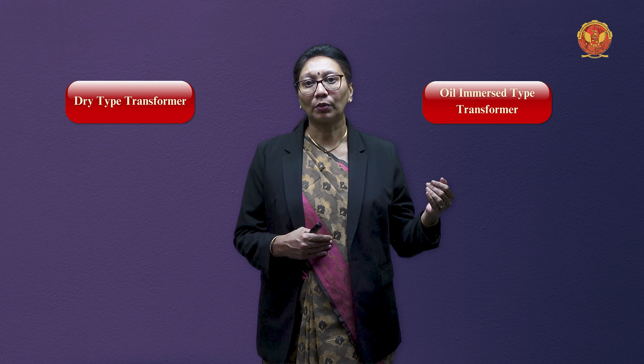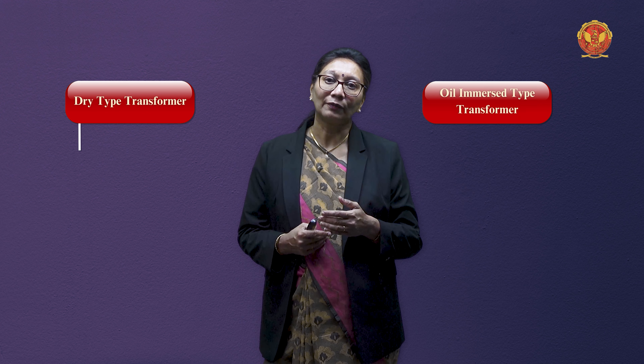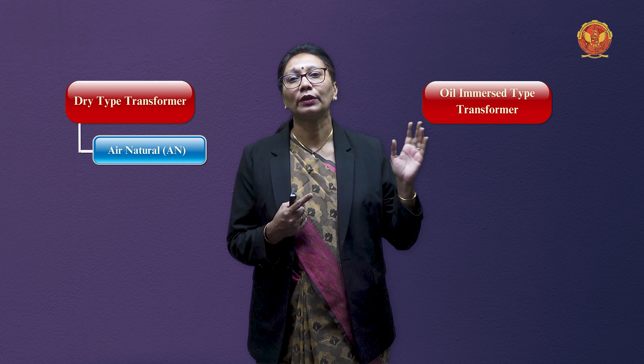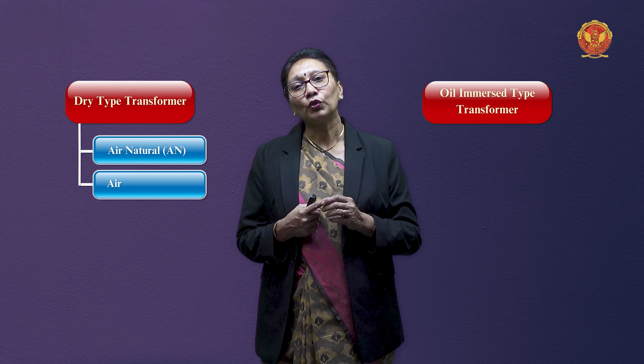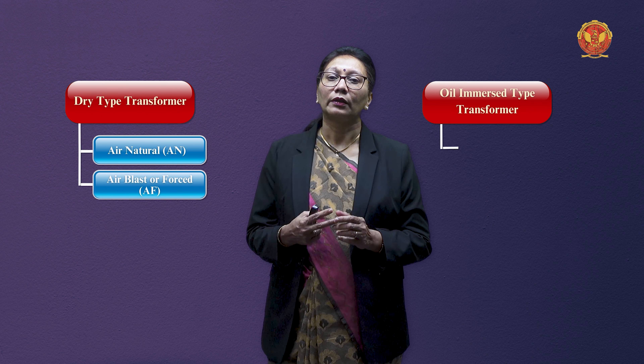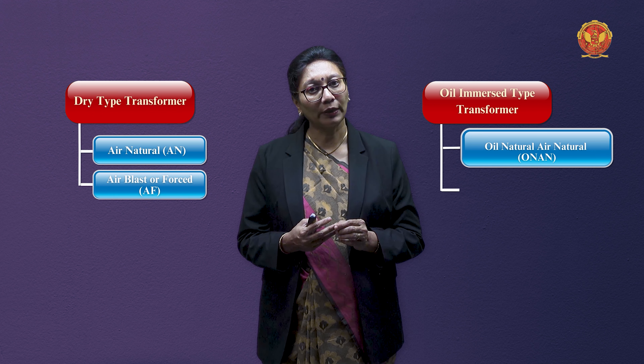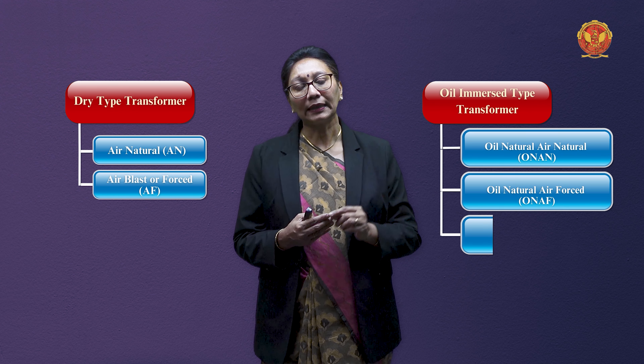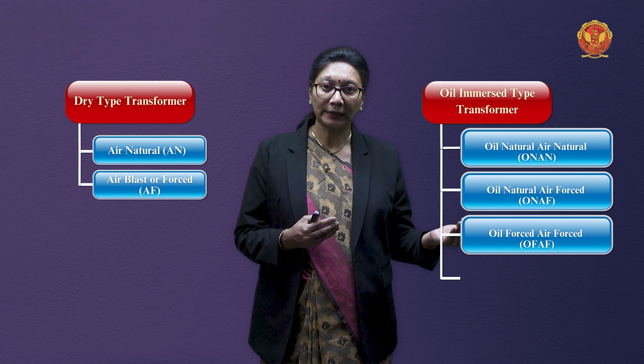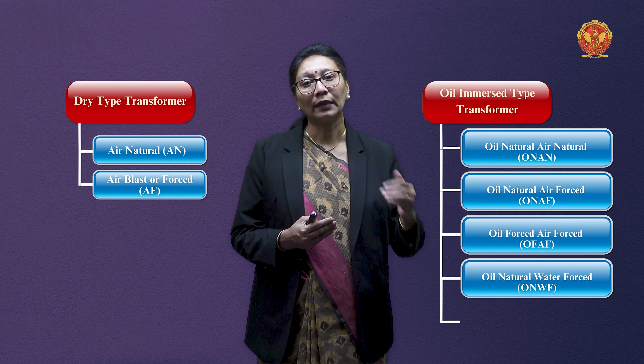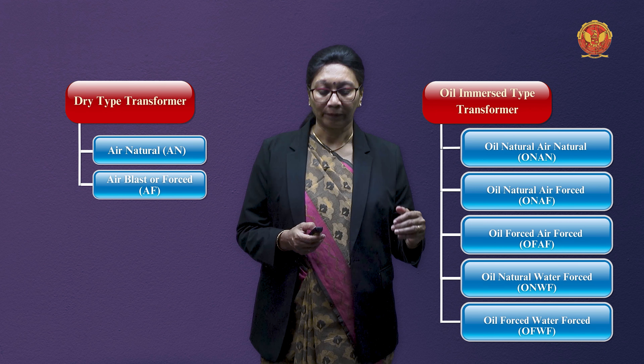Basically there are two types of transformers: one is dry type, in which no oil or water is used, and the other is oil-immersed type. For cooling of transformers, the major common methods are: air natural, air blast and forced, oil natural air natural, oil natural air forced, oil forced air forced, oil natural water forced, and oil forced water forced cooling.